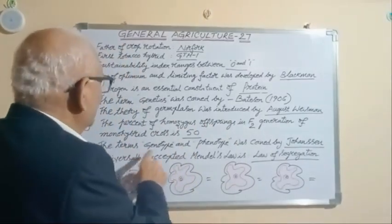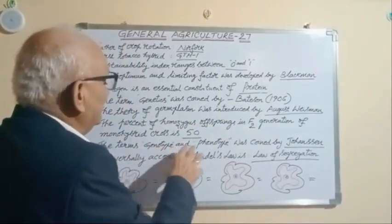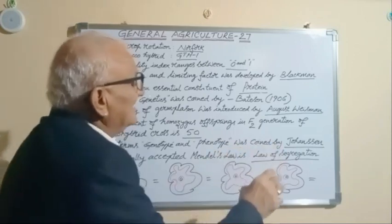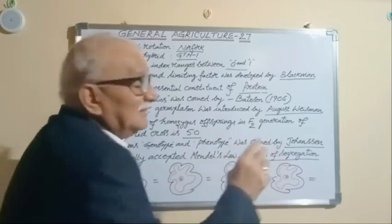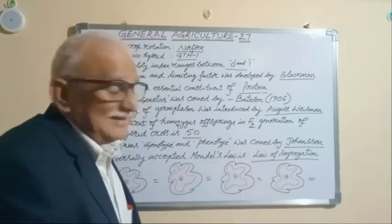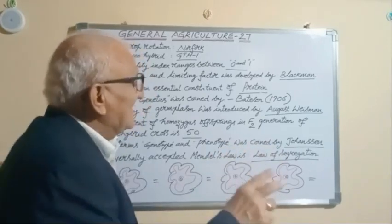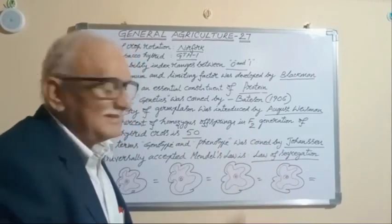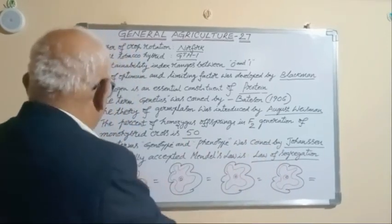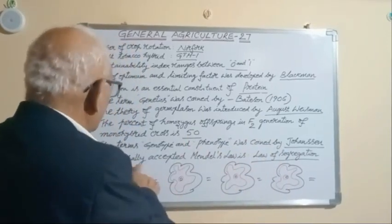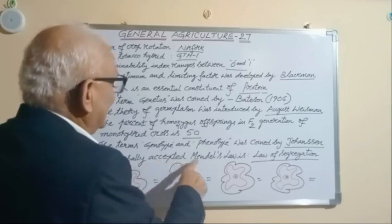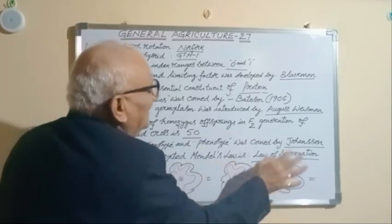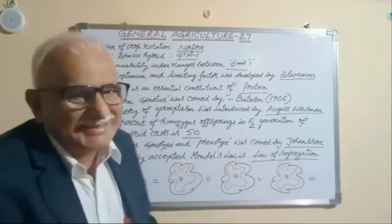The terms genotype and phenotype were coined by Johannsen. The universally accepted Mendel's Law is the Law of Segregation.